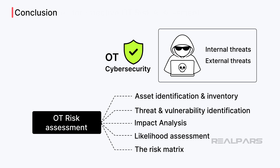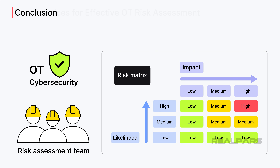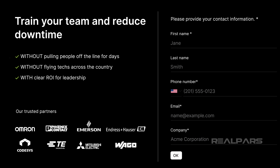OT cybersecurity risk assessments are the foundation for creating an effective defense against internal and external threats. By engaging all stakeholders in the process, the most complete picture of the threats and likelihood of occurrence can be determined and plotted in a risk matrix. From the risk matrix, the proper decisions can be made for employing cybersecurity defenses. As OT risks evolve, it is important for facilities to be proactive and conduct ongoing risk assessments as the foundation of their OT cybersecurity program. If you are a plant manager or maintenance manager and want to train your team online without pulling them off the factory line for days, check out realpars.com/business and fill in the form to get a demo of our platform.